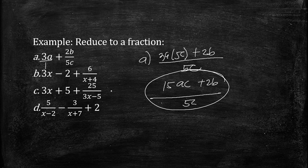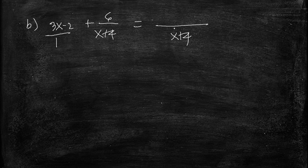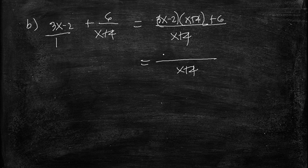Now let's proceed with letter B. In letter B we have the expression 3x minus 2 plus 6 over x plus 4. We place 3x minus 2 over 1, so the LCD is x plus 4. Multiplying: 3x minus 2 times x plus 4 plus 6, all over x plus 4. By the special products rule we get 3x squared plus 12x minus 2x.